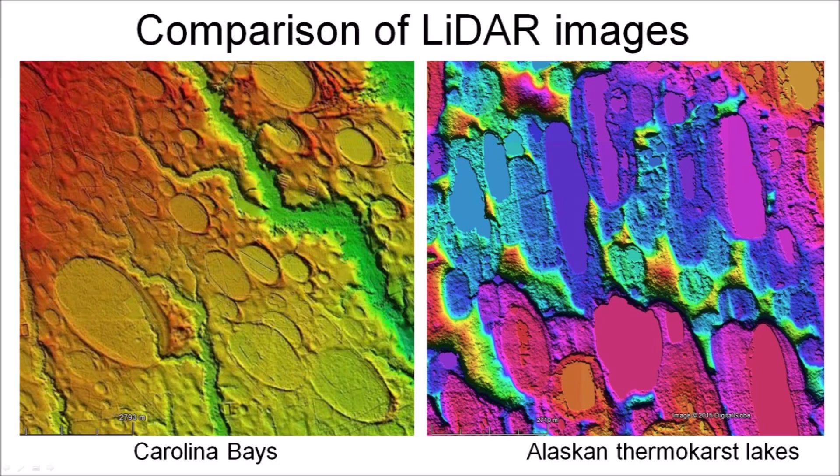When LiDAR images became available, they revealed significant differences between the Carolina Bays and the thermokarst lakes in Alaska. Thermokarst lakes are created when permafrost melts and produces sinkholes that fill with water. The Carolina Bays have smooth elliptical shapes with raised rims, whereas the thermokarst lakes have rough irregular borders and do not have the overlaps that are present in many Carolina Bays. Considering the substantial geological differences, the Carolina Bays and the thermokarst lakes could not have formed by the same physical mechanisms.